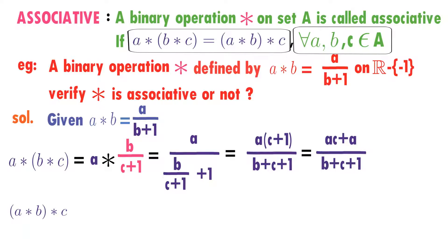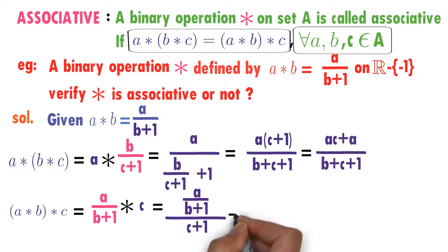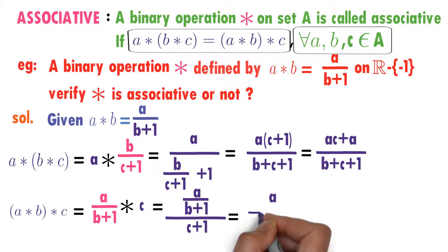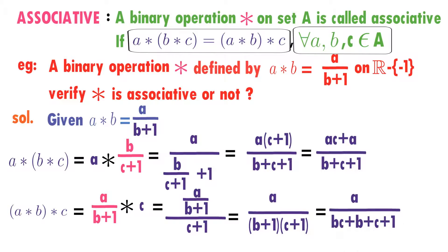Now I will calculate (A★B)★C. Observe what is there in brackets — A★B. A★B is defined as A divided by (B+1). Star C. Observe here again: star operation between two elements. First element is A/(B+1), whole divided by second element plus 1, that is C+1. From here, A divided by (B+1) into (C+1) equals A divided by (BC + B + C + 1).